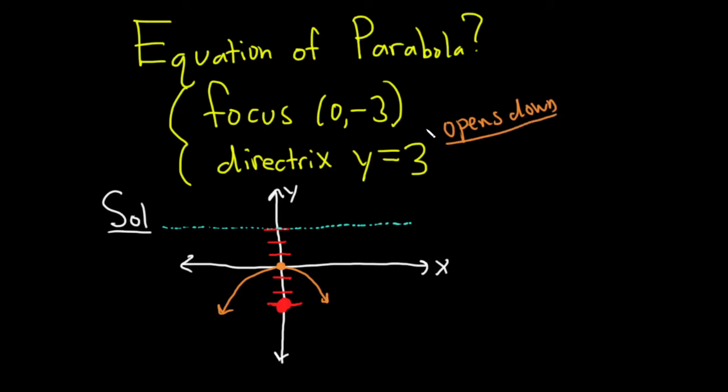Parabolas that open down have the X being squared. Just think of Y equals X squared. Y equals X squared is the easiest parabola and it looks like this. So that opens up and the X is being squared.